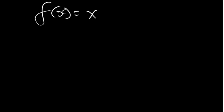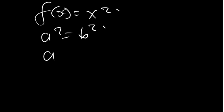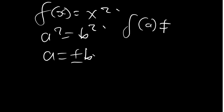One more example: f(x) = x². This is similar to the first example — a² = b², squaring both sides gives a = ±b. Since f(a) ≠ f(b), this function is not one-to-one.